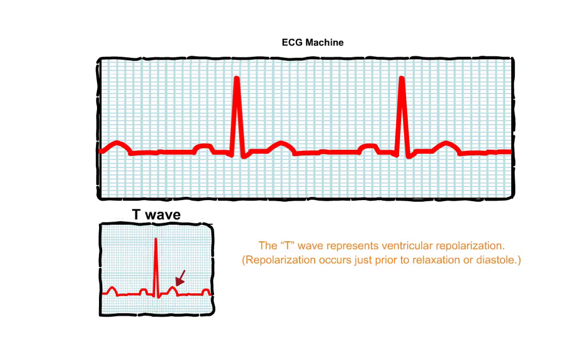The T wave represents ventricular repolarization. Repolarization occurs just prior to relaxation, or diastole.